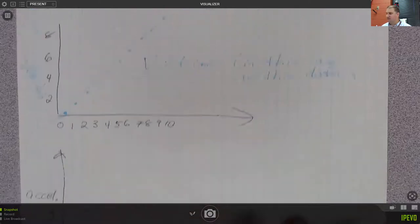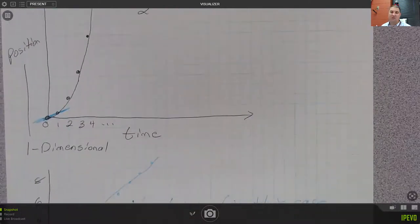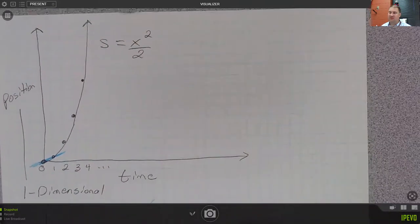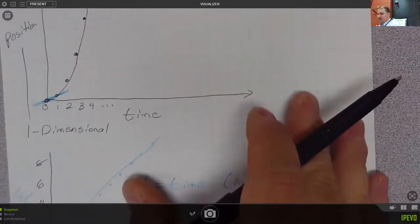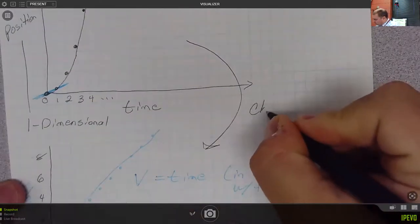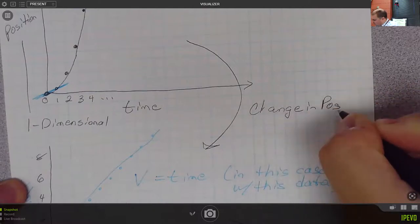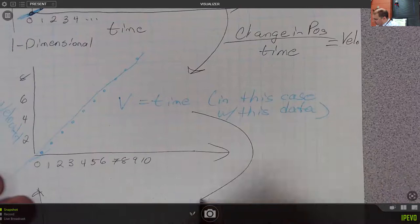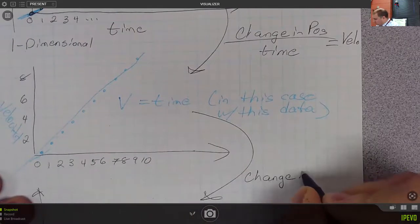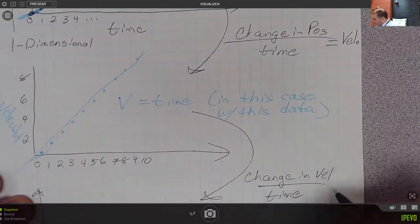Whether you believe it or not, you actually just did calculus. Even in earlier algebra classes when you're trying to figure out the order of a polynomial and doing those changes over time, that's an example of calculus. Technically these are all averages. Change in position over time equals velocity, and change in velocity over time equals acceleration.